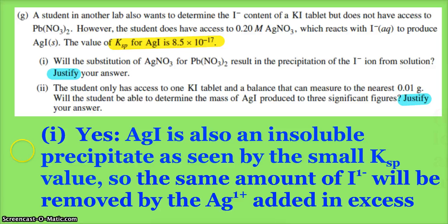The student only has access to one KI tablet and a balance that can measure to the nearest 0.01 grams. Will the student be able to determine the mass percent of silver iodide produced to three sig figs? Our last balance went to the thousandth, and that gave us three sig figs for all of our mass measurements when we subtracted. So I don't think we'll be able to do this.